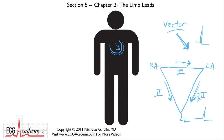Conversely, anything that's going in the opposite direction will show up as a negative deflection on the EKG. So if we look at any one particular lead, we can tell what direction the signal is going in.